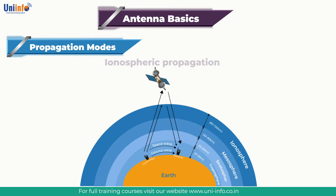Next is Ionospheric Propagation. Here, the radio signals are modified and influenced by a region high in the Earth's atmosphere known as the ionosphere. This form of radio propagation is used by radio communication systems that transmit on the HF or short wave bands. Using this form of propagation, stations may be heard from the other side of the globe, dependent upon many factors including the radio frequencies used, the time of day, and a variety of other factors.